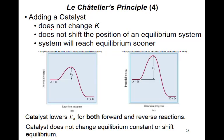Now the catalyst: if you add a catalyst, there is no change in the equilibrium constant. The system will not shift — it will not go left or right. The reason is that a catalyst affects both the forward and reverse reactions equally, so the rate of the forward reaction equals the rate of the reverse reaction, and the system remains at equilibrium.